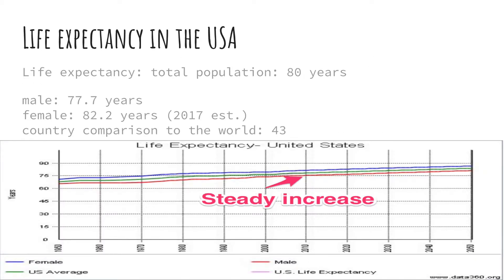The life expectancy in the USA is 77.7 years for a male and 82.2 years for a female. The USA is currently ranked 43rd out of 224 — in this case, the lower number the better. This is pretty good because of clean water, good food, as well as medicines like vaccines that can help people with small diseases that can turn into bigger diseases over time.